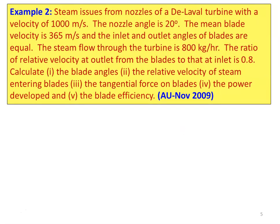Example 2. Steam issues from the nozzles of a De Laval turbine with a velocity of 1000 meters per second. Nozzle angle is 20 degrees. Mean blade velocity is 360 meters per second and inlet and outlet angles of the blades are equal. Steam flow through the turbine is 800 kg/h. Ratio of relative velocity at outlet to inlet is 0.8. Calculate blade angles, relative velocity entering the blade, tangential force, power developed, and blade efficiency.